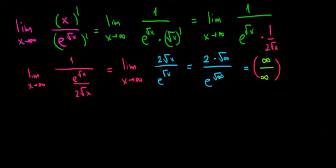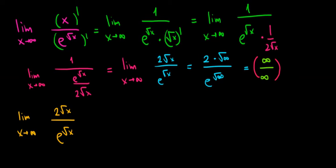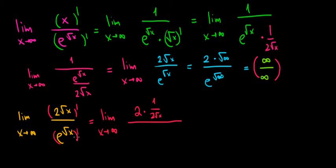Let's apply L'Hôpital again. We have the limit x approaching infinity of 2 square root of x divided by e to the power square root of x. Taking the derivative: the derivative of 2 square root of x is 2 times 1 over 2 square root of x. Divided by the derivative of e to the power square root of x, which is e to the power square root of x times the derivative of square root of x, which is 1 over 2 square root of x. Let's cancel out some terms.